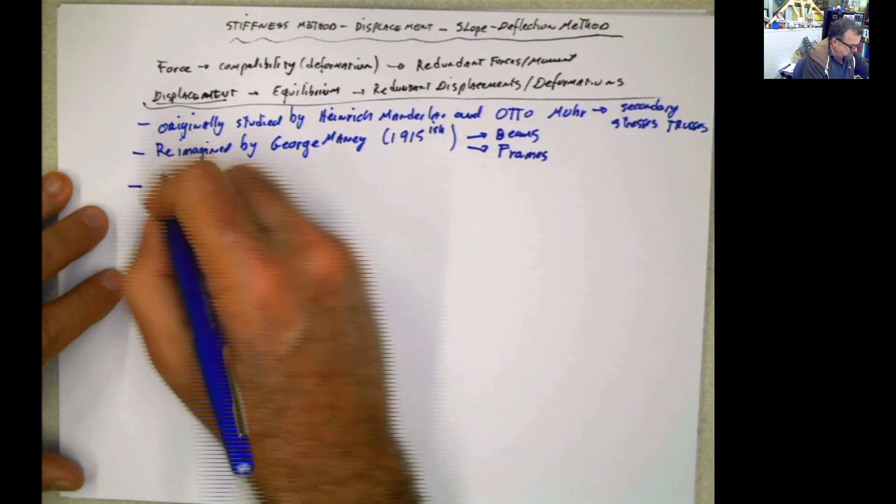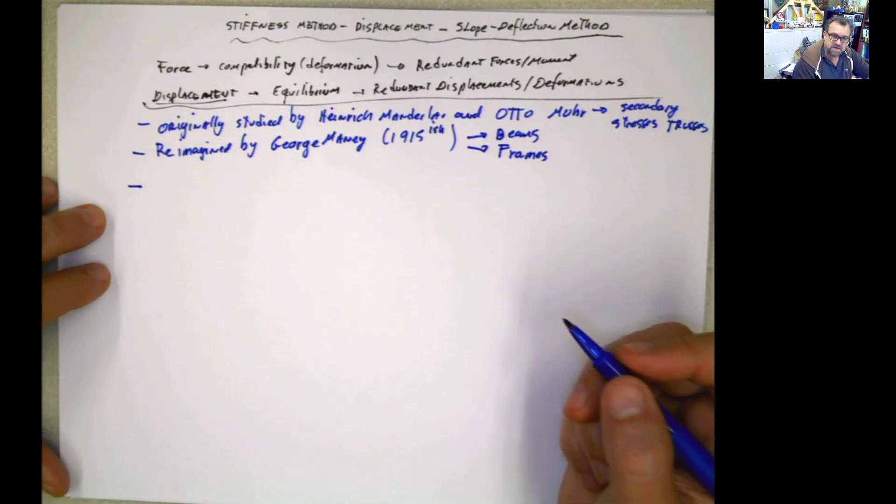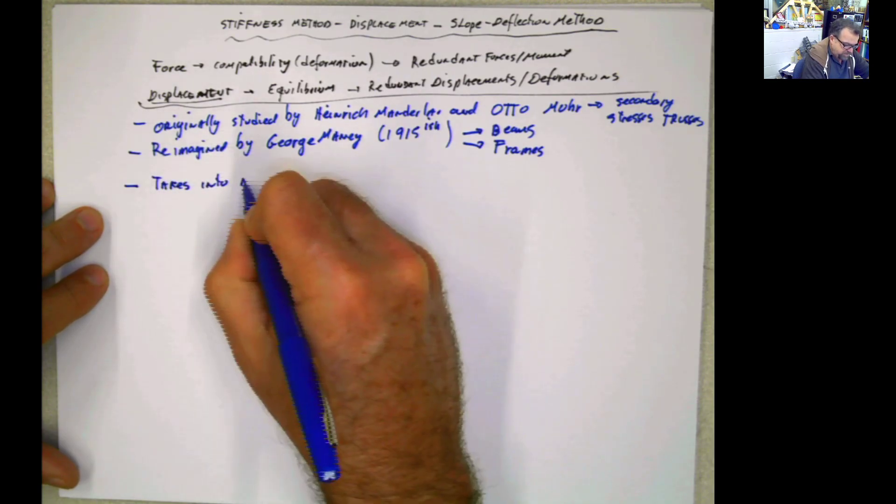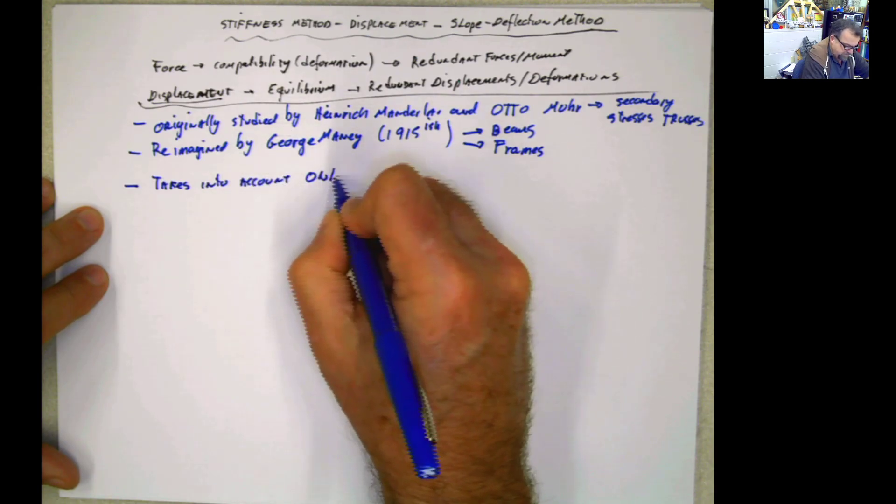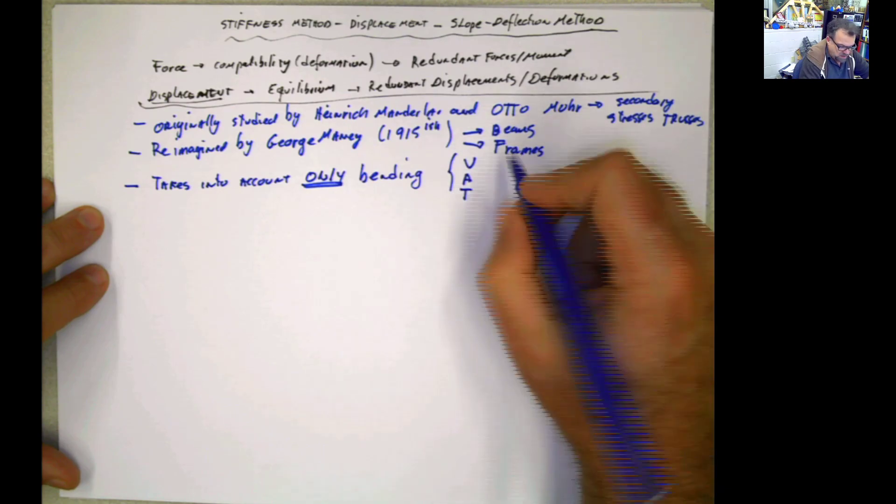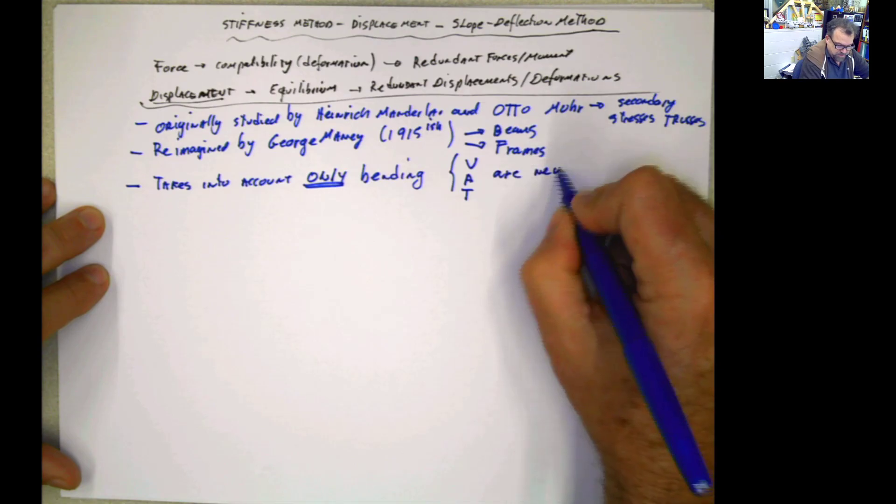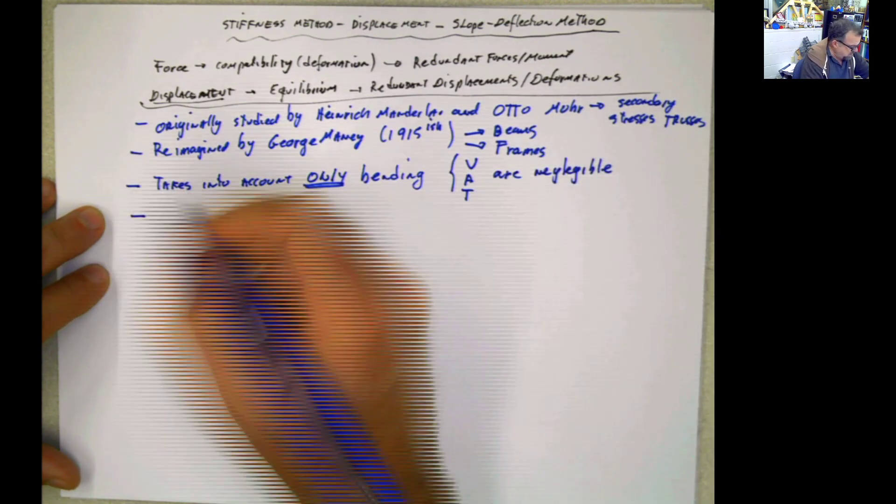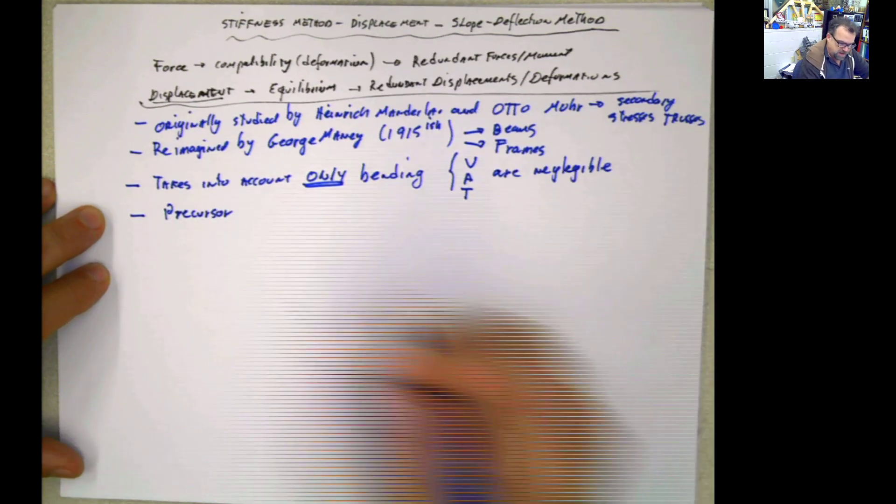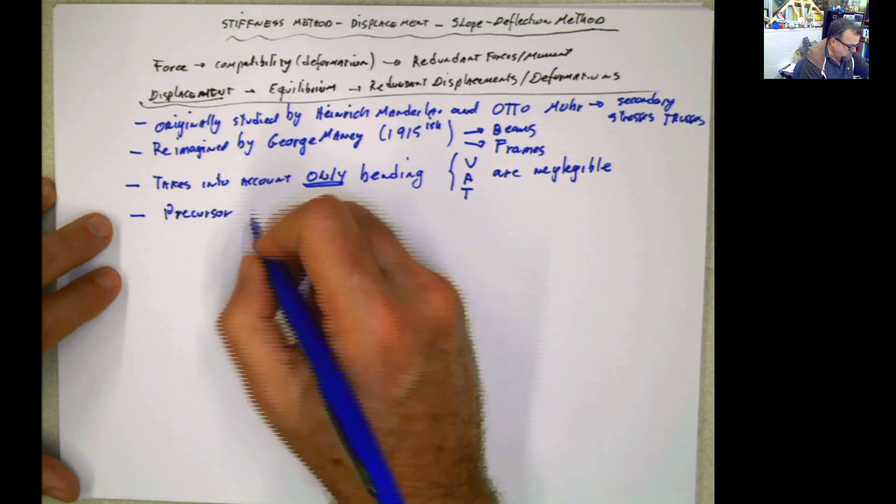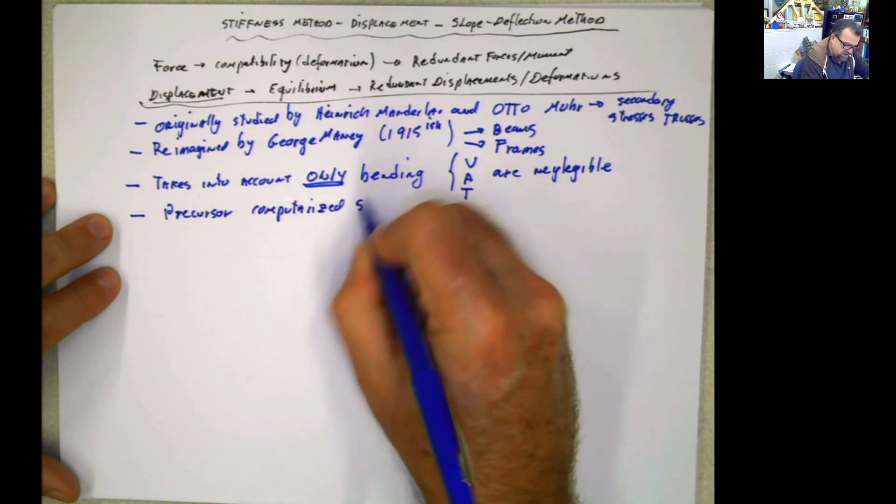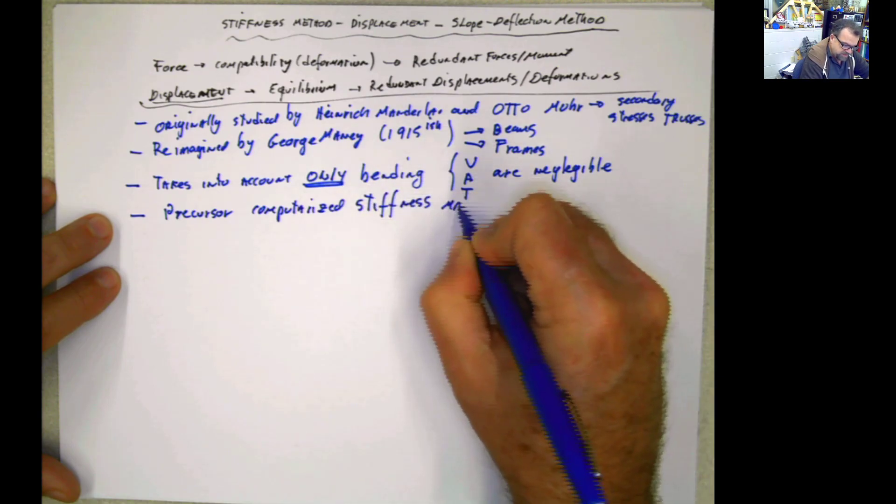So this method has several limitations, but this is a very nice method. It takes into account only bending, so shear, axial, torsion are not used for this. They say they are negligible. So this method is precursor to the moment distribution method that we're going to be covering, and it will be the precursor of the computerized stiffness matrix method.